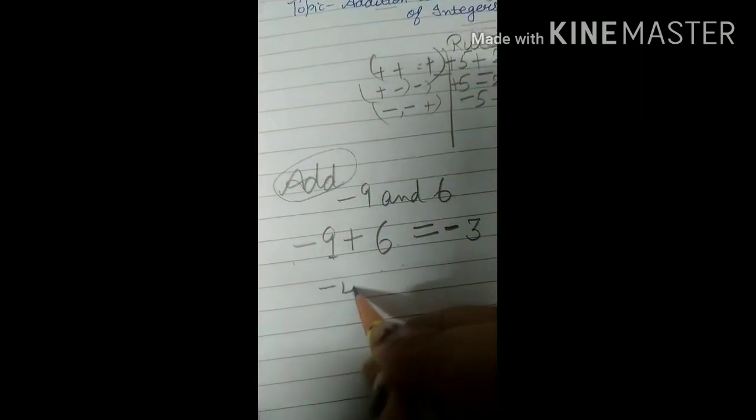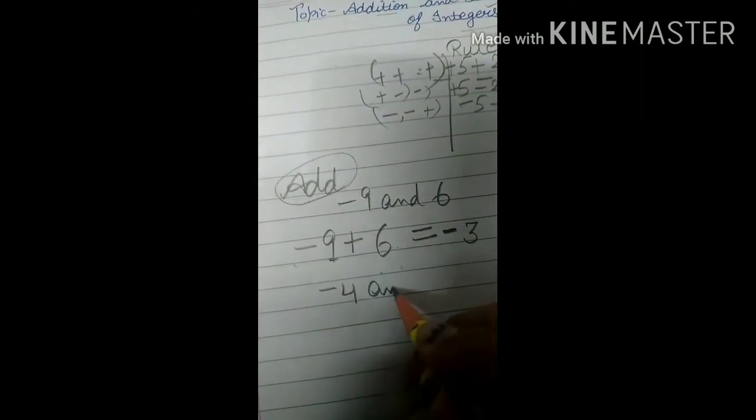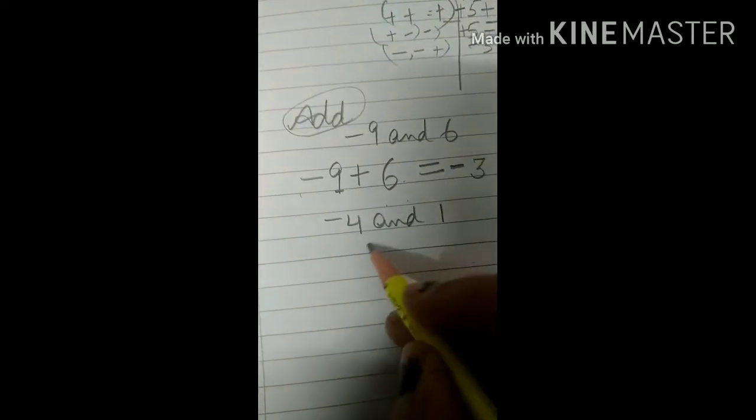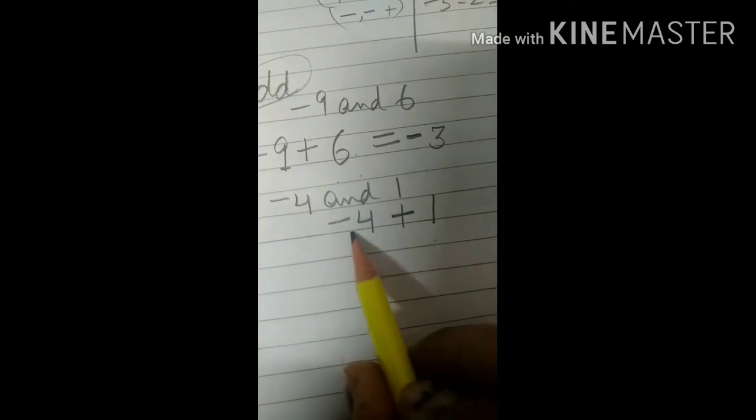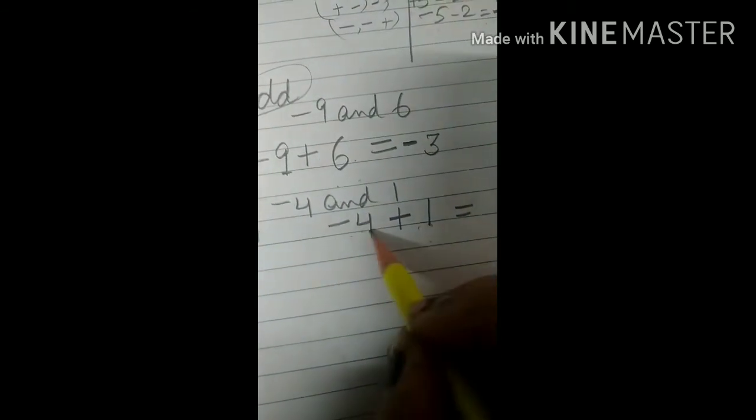One more example: minus 4 and 1. You have to add them. Plus minus gives minus, so we write minus. The sign comes from the bigger number — the bigger number is 4, and in front of 4 there is minus, so we write minus 3.